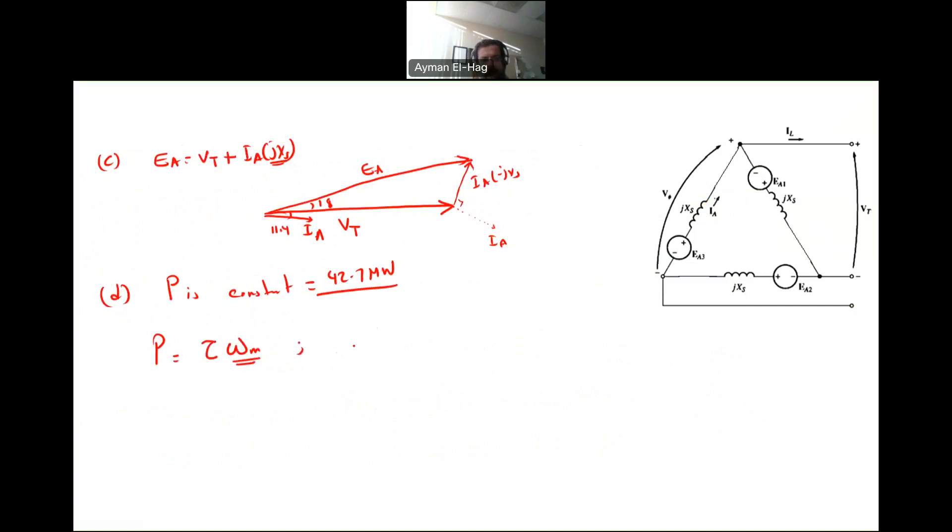Now, to find omega M, we have to find N. N is equal to 120 times 60, the frequency, divided by 2, because this is a two-pole machine. And this will equal to 3600 RPM.